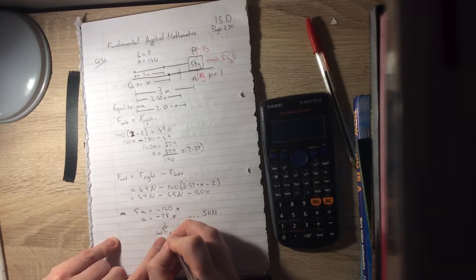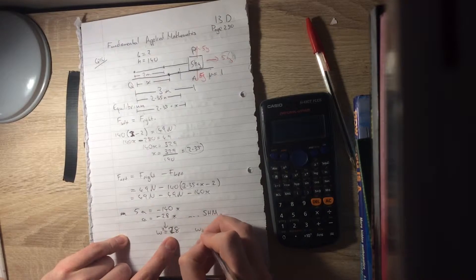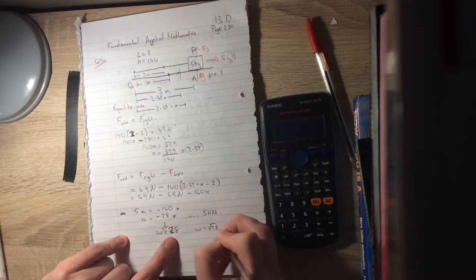Omega squared is going to be 28, and omega is the square root of 28 for this problem.